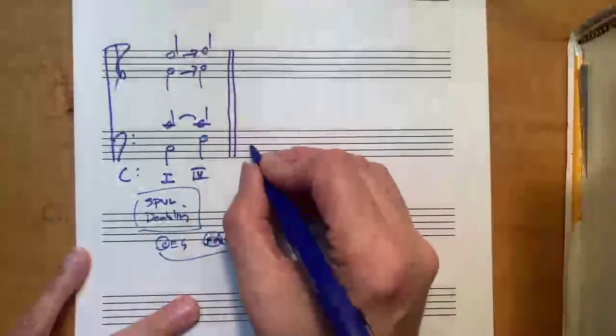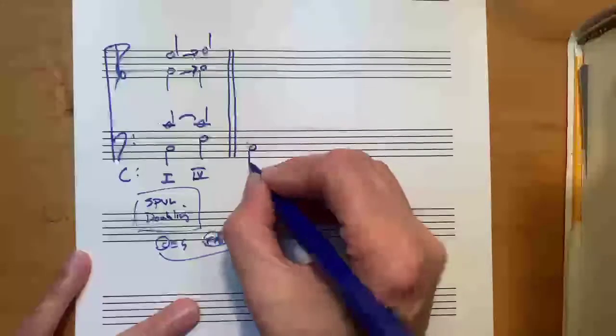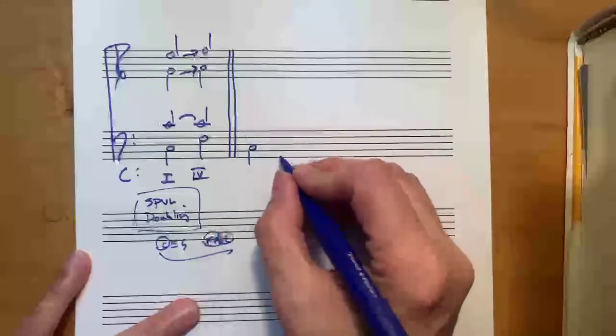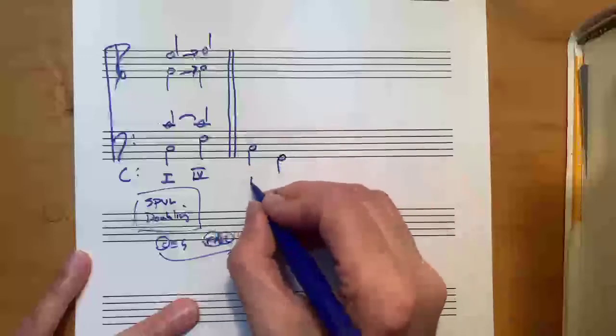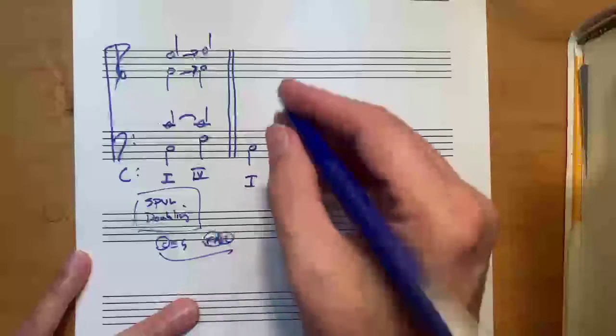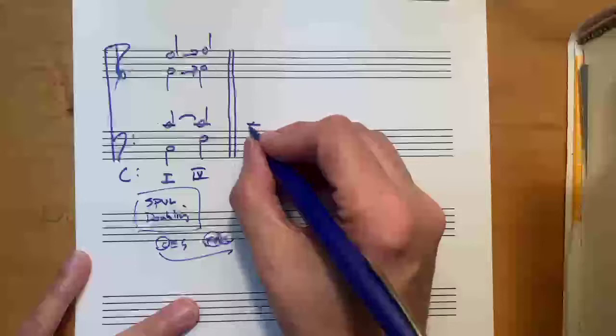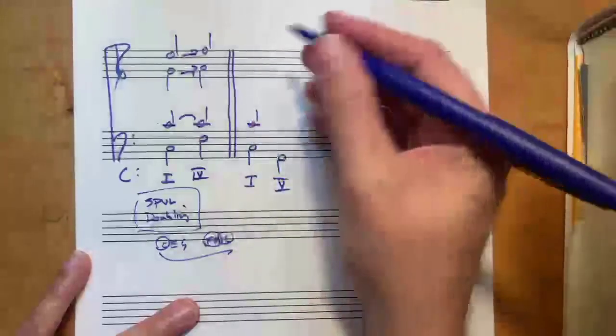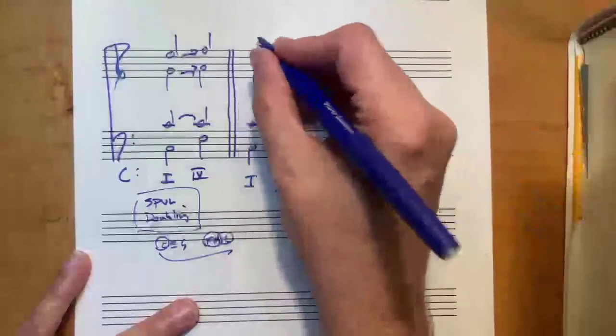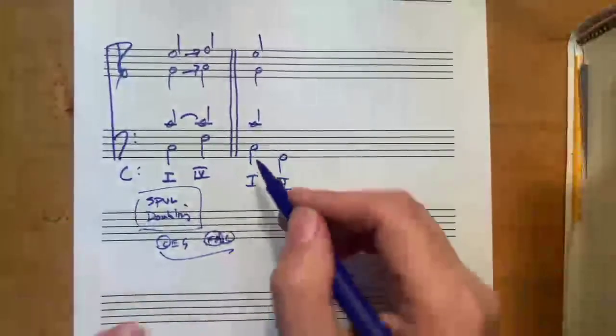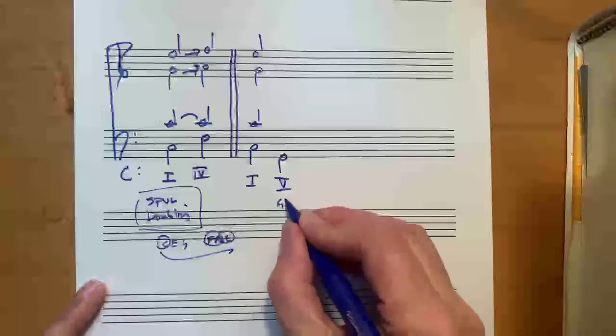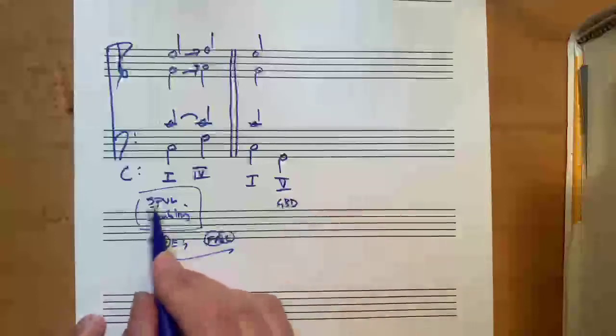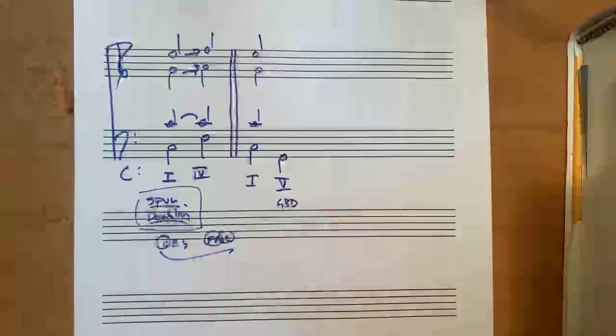I would like to do the same progression from C to G. That's 1 to 5. So let's start with that same voicing, C, C, G, E. Stop the video and write a connection from 1 to 5. And of course the 5 chord is G, B, D. With smoothest possible voice leading and proper doubling.